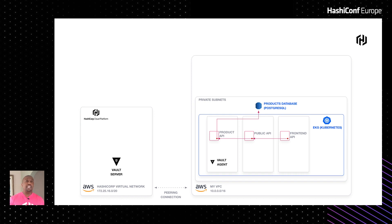In addition to the AWS architecture, we're now bringing in the HCP element — the HashiCorp Cloud Platform — which gives us a managed Vault cluster. Inside HCP, we have an HVN (HashiCorp Virtual Network), which is very similar to a VPC in AWS. We have peering set up between our HVN and our VPC, enabling all infrastructure in our private subnets to speak to our Vault cluster. Because we're using Kubernetes, we use the Vault sidecar injector — essentially a Vault agent running as a sidecar next to our application.